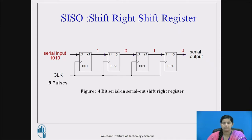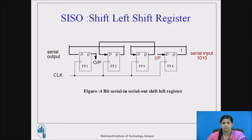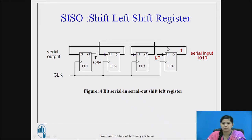In total, 8 pulses are required to input the data serially and to read out the data serially. The next type is the shift left shift register. We will keep the structure of D flip flops the same as the shift right register — we just have to connect the output of the next flip flop to the input of the previous flip flop. For example, we select the rightmost flip flop first and give the serial input from the right-hand side. Flip flop 4's output is given to flip flop 3's input D3, and the output of flip flop 3 is given to the input of flip flop 2. The output of the next flip flop is the input of the previous flip flop.